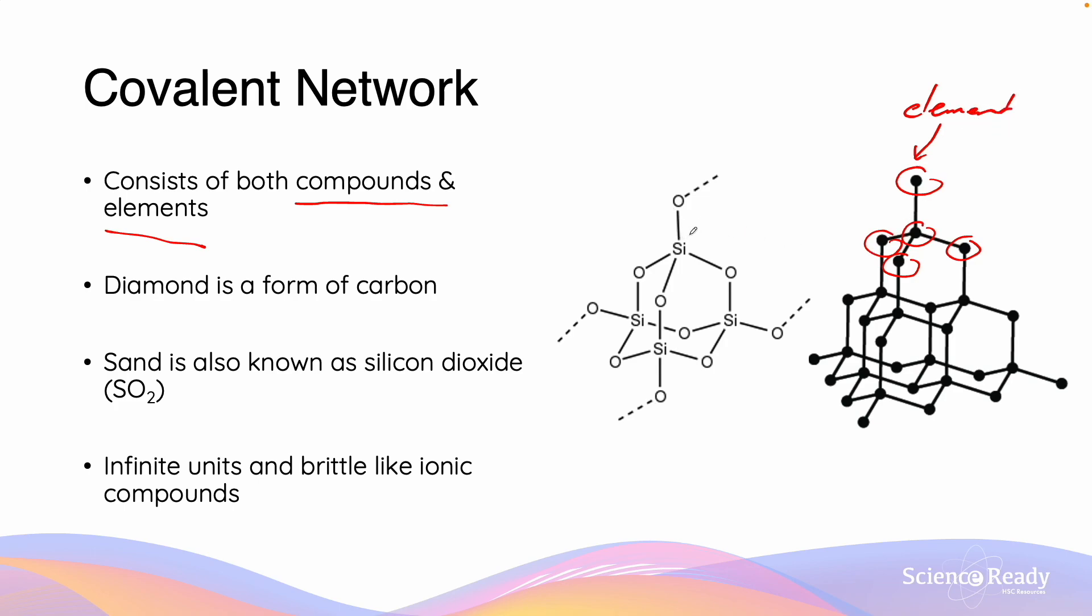Meanwhile, sand, also known as silicon dioxide (SiO2), is going to have this tetrahedral structure which is like diamond. This is why sand is going to be so strong. However, sand contains both silicon and oxygen and therefore this one is going to be a compound. So therefore, we can have compound covalent network substances and we can have element covalent network substances.